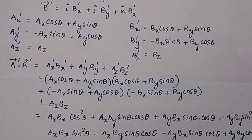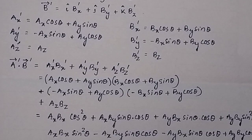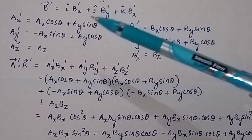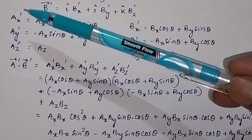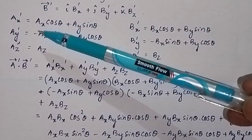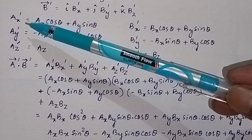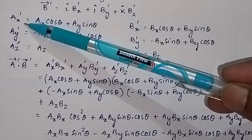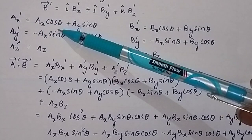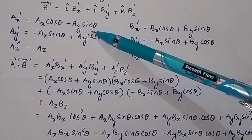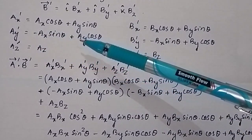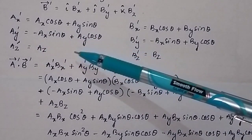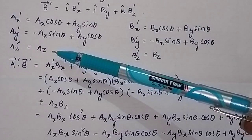In the previous video, we proved that if a vector rotates at an angle theta about the Z-axis, then AX-prime, the X-component after rotation, will be equal to AX cos theta plus AY sin theta. Similarly, AY-prime will be equal to minus AX sin theta plus AY cos theta.